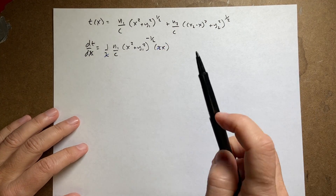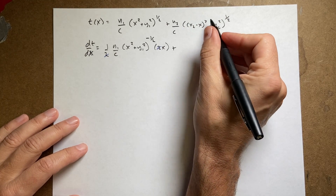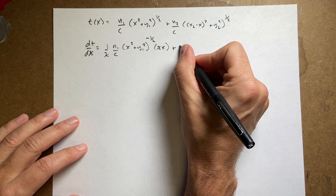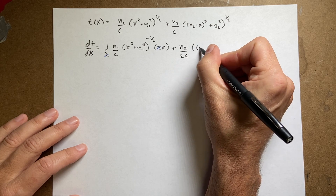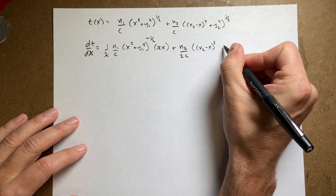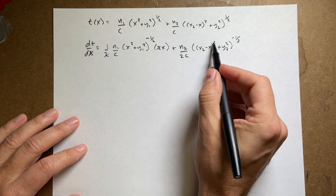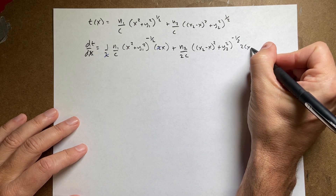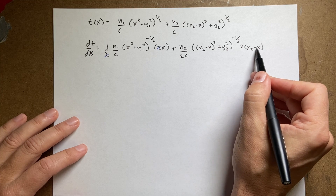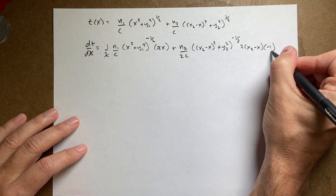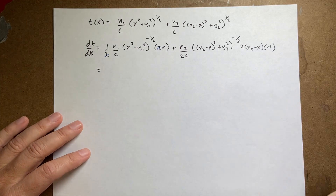For the second term, similarly bring down the 1/2: (n2/2c)·((x2 − x)² + y2²)^(−1/2). The derivative of the inside with respect to x is 2·(x2 − x)·(−1), giving a factor of −(x2 − x). The 2's cancel here as well, and I convert the negative-half powers back to square roots.